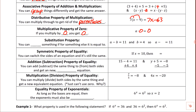The substitution property — when we say substitute, we'll plug things in. You can plug something in for something else if it is equal to it. In this example, a minus b equals 11 and b equals four. Since b is the same as four, those are interchangeable — I can replace that b with a four. So a minus four equals 11. That's the substitution property.